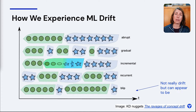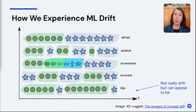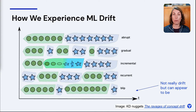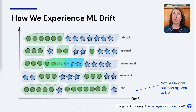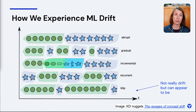Or you might see something that is a blip. The thing about blips is they might just be an outlier, not a drift issue — but you might not know the difference at first. So that's worth thinking about when you're evaluating for machine learning drift.